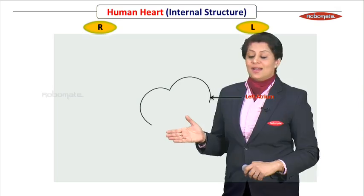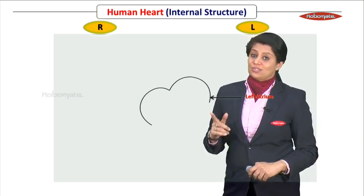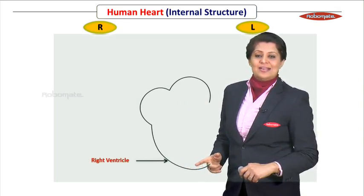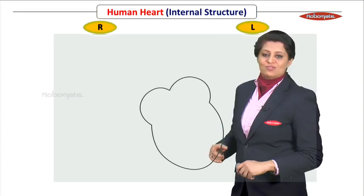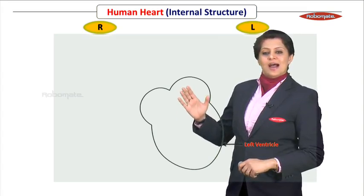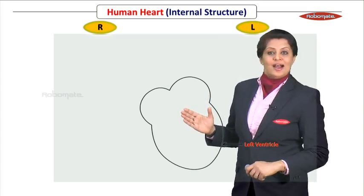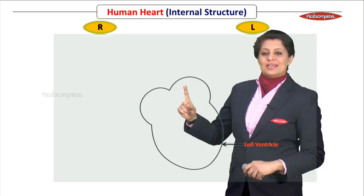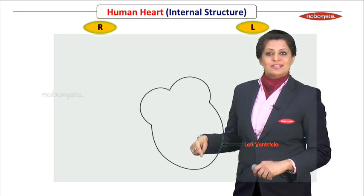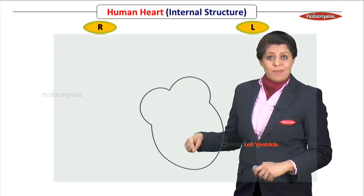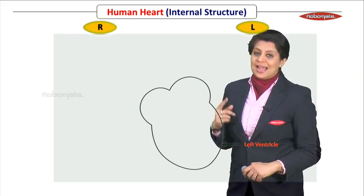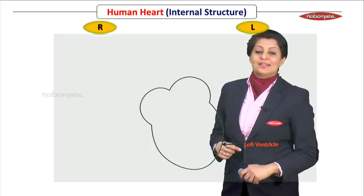Now we need to draw the lower chambers of the heart. A nice curve for the right ventricle and then the left ventricle on the other side. This completes the outline of our heart. Observe: this is the base of the heart, and down here this is the apex of the heart. The apex should be slightly tilted towards the left side — that is the structurally correct diagram.